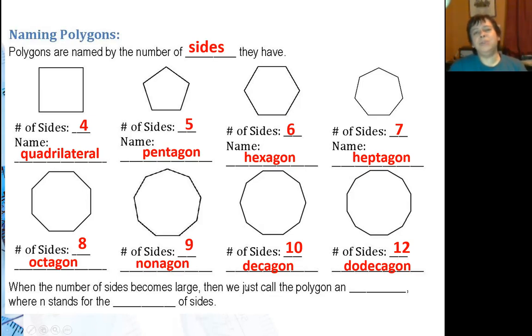That's usually the highest to go on the number of sides you have to know and the name of the polygon. So when the number of sides gets larger than twelve we just call the polygon an n-gon where we put the number in for n. N stands for the number of sides.